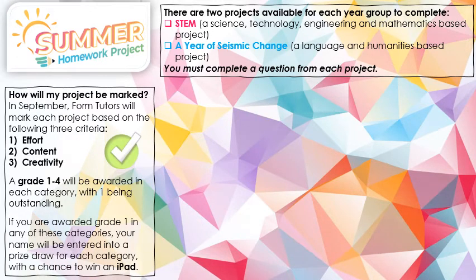You will be wondering how your projects will be marked. In September, form tutors will mark each project based on the following criteria: effort, content, and creativity. They will award a grade one to four in each category, with one being outstanding. It's really important that as part of your research you show that you have gone above and beyond. Present your work in a creative and unique way to catch the attention of your audience, and think about whether the content you include answers the question that has been set.